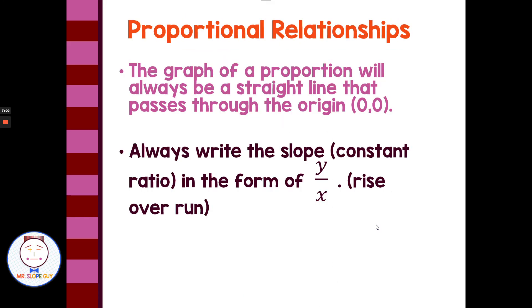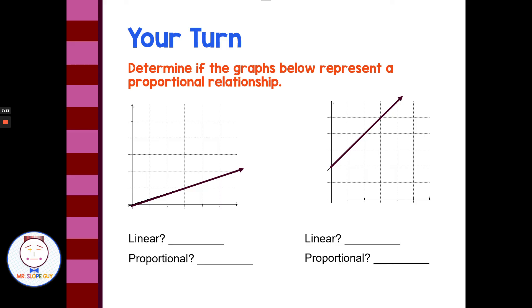The graph of a proportion will always be a straight line that passes through the origin. Let's repeat that. The graph of a proportion will always be a straight line that passes through the origin. We always want to write slope, or the constant ratio, in the form y over x, rise over run. So we're always talking about the change in the up or down on the y of the numerator, and the change on the x, or the change in the run, in the denominator.